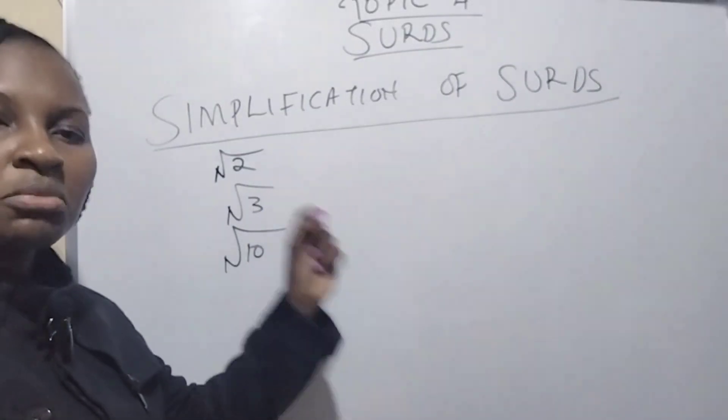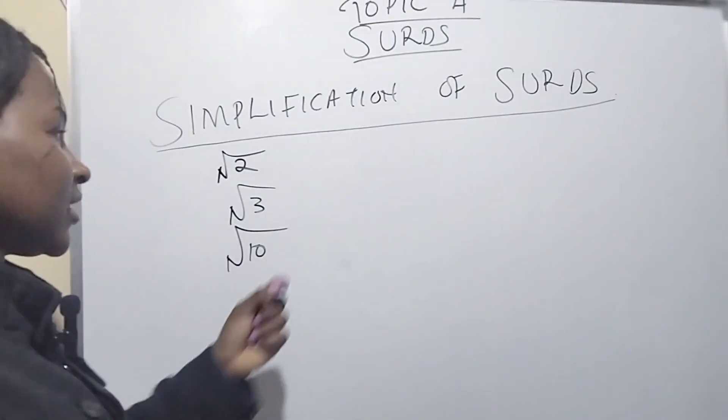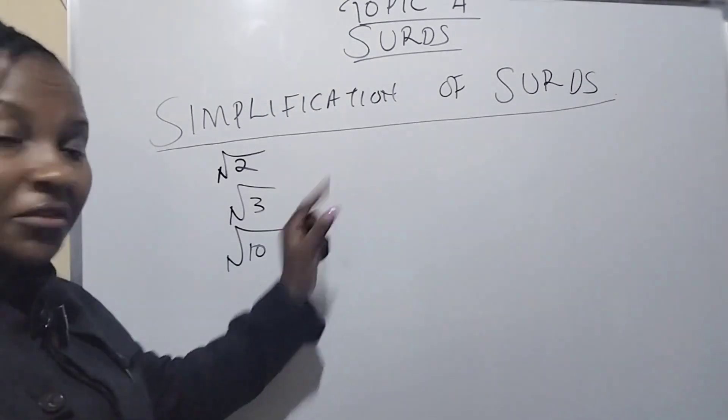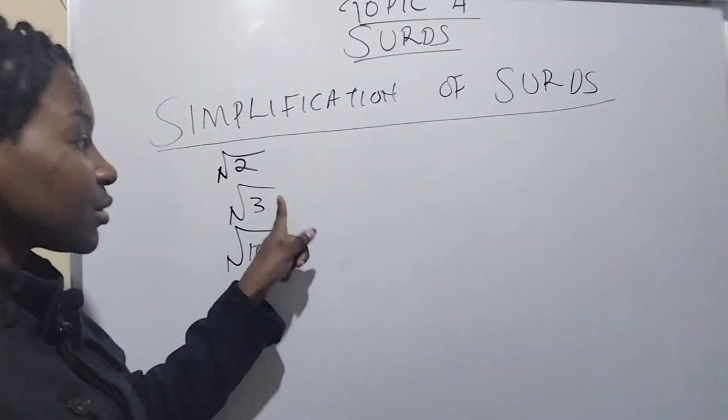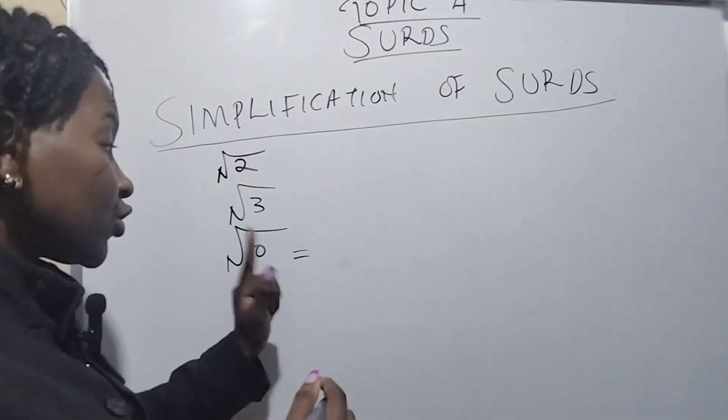How do we simplify surds? Root 2 is already simplified, root 3 is already simplified, but root 10 is not yet simplified.